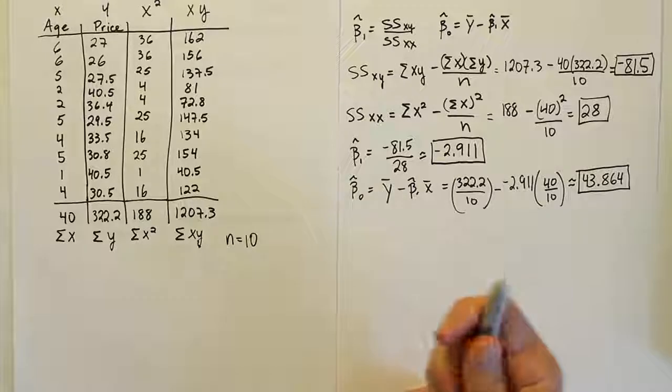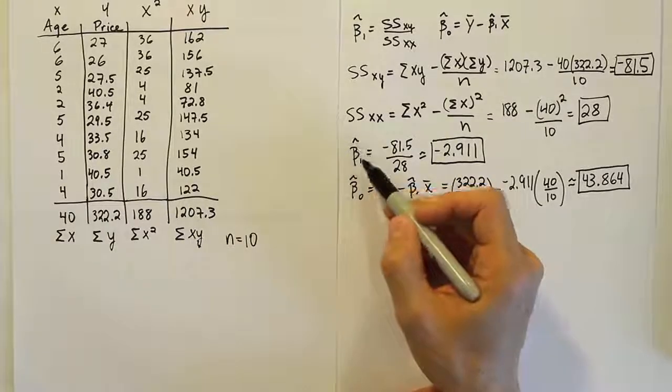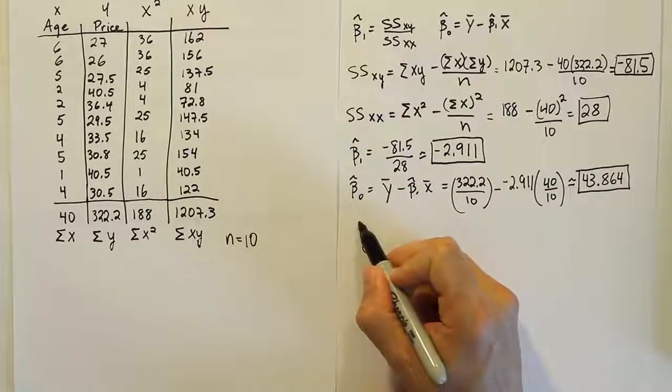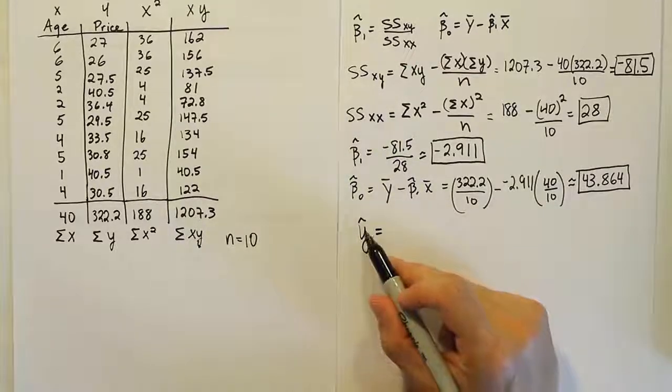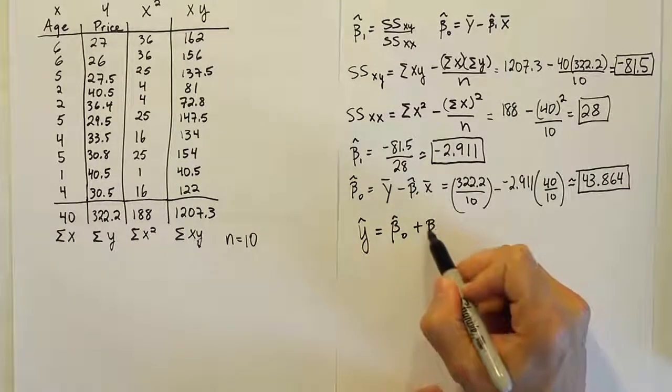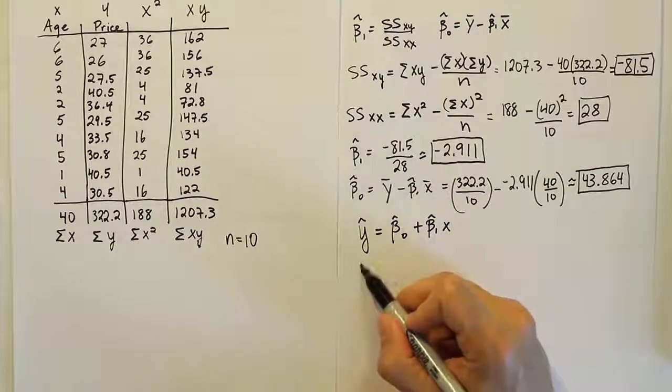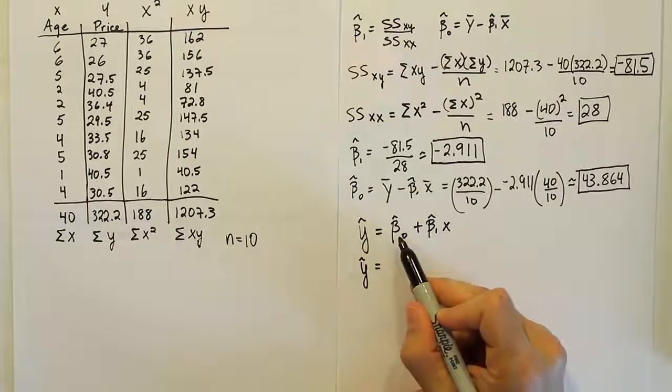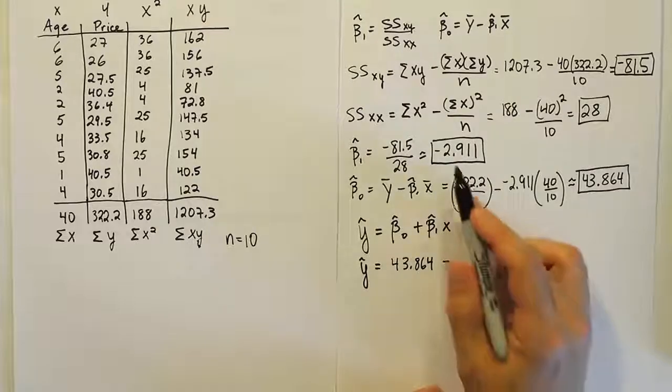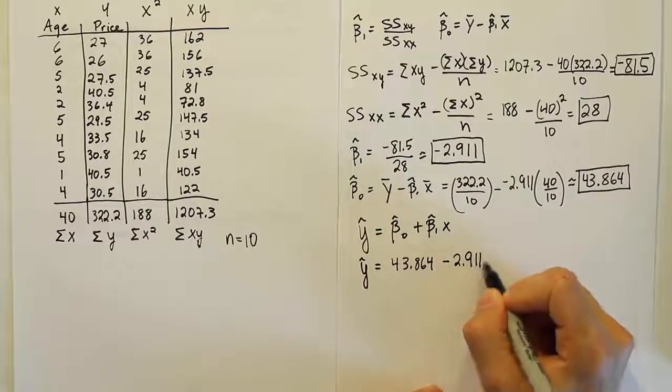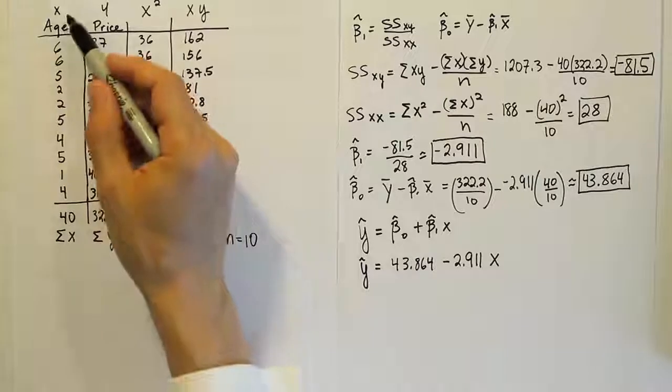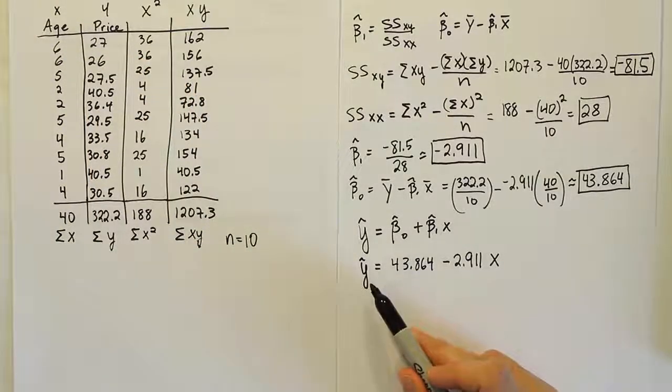And what we're going to do now is going to plug them in. Remember what the hat means here, so beta 1 hat means it's an estimator of the true slope, and beta naught hat is an estimator of the y-intercept. We don't have the actual values, but we have an estimator based on our sample data. Let's take this model then and fill it in. Remember, the model is going to be the intercept plus the slope times the x value, so for us, that means we're going to have the intercept of 43.864 plus a minus, so we're just going to say minus then, 2.911 times x. Remember what x is here? x is going to represent the age of the car in years. How old the car is, and then y is going to represent the price in thousands of dollars.